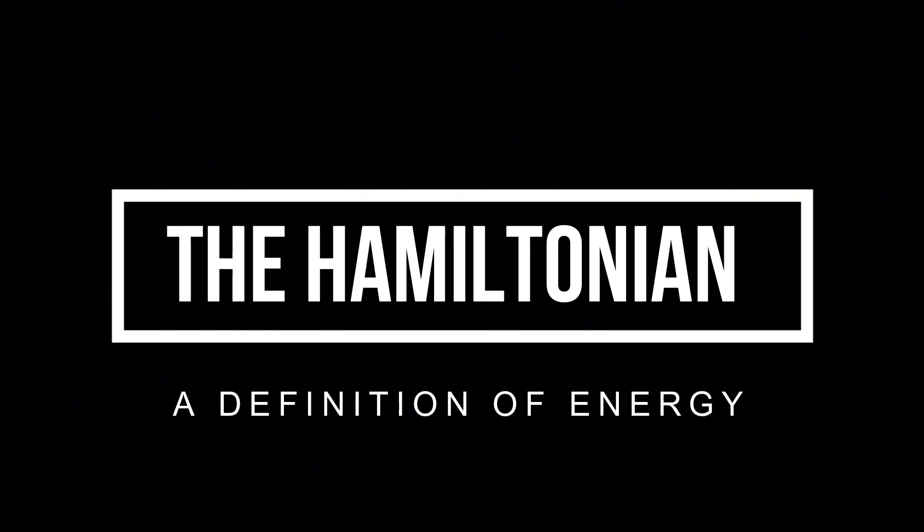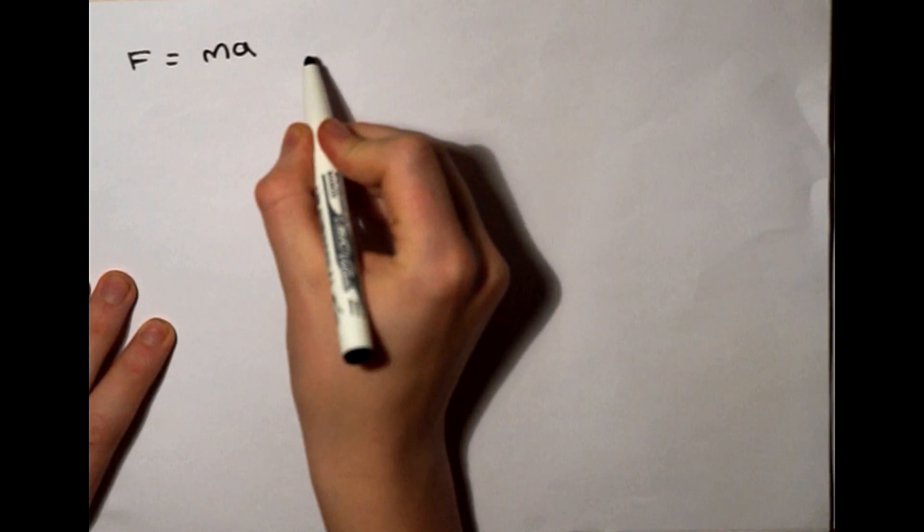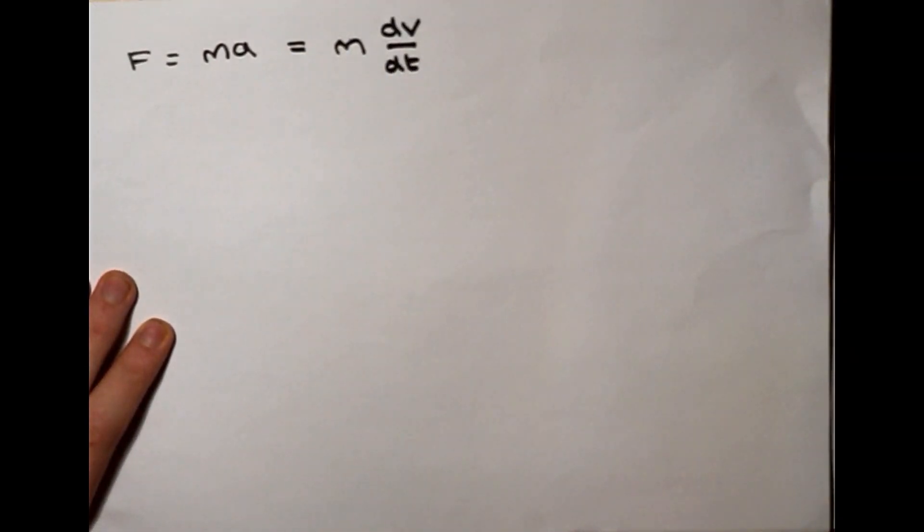This is how to derive the Hamiltonian function and a fundamental definition for energy using Newton's laws. If we start with the familiar Newton's second law equation F equals ma, then writing acceleration as the derivative of velocity with respect to time,